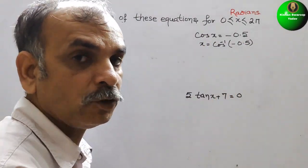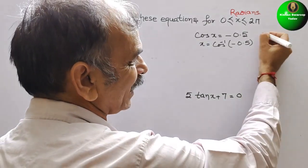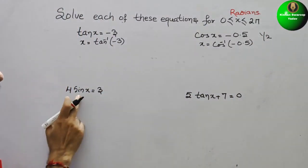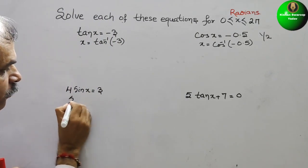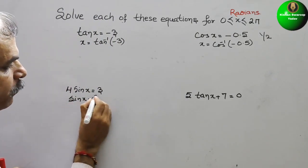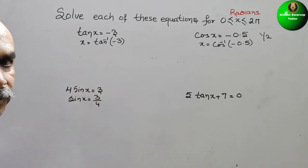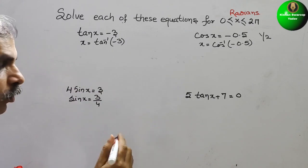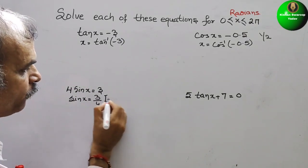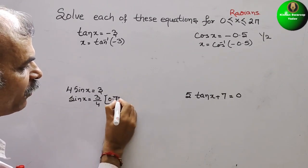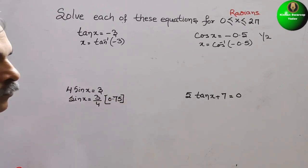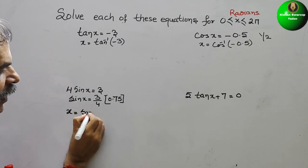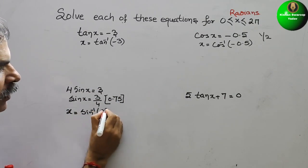0.5 is 1/2, so we can write cos inverse of 1/2. Next, 4 sin x equals 3, so sin x equals 3/4. Just divide 3 by 4 to get 0.75. Now converting to inverse, x is equal to sin inverse of 0.75.